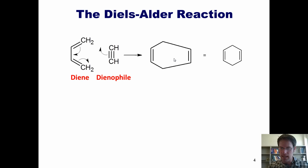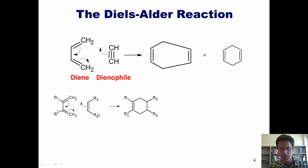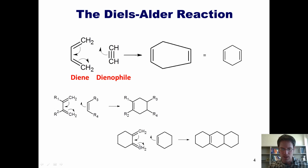We aren't limited to unsubstituted dienes or dienophiles. We can begin with a diene and a dienophile that have a variety of different substituents — represented generically as R1, R2, R3, and R4 — to give multi-substituted cyclohexene or cyclohexadiene products. Alternatively, if we use a diene and dienophile whose pi electrons are already embedded in cyclic molecules, then after the Diels-Alder reaction we can get a polycyclic product, with wide variety of substitution possible.